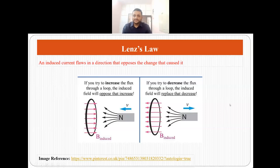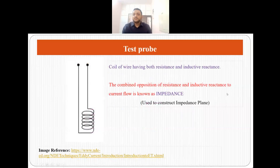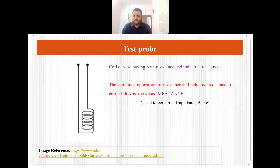Faraday's law and Lenz's law are very important in eddy current testing because they tell us about the magnitude and direction of the induced EMF. The test probe is a coil and it has both resistive as well as inductive reactance, and the combination of resistive and inductive reactance — the combined opposition — is what we call impedance. This impedance is used to construct an impedance plane, which is further used to study defects or defective surfaces.